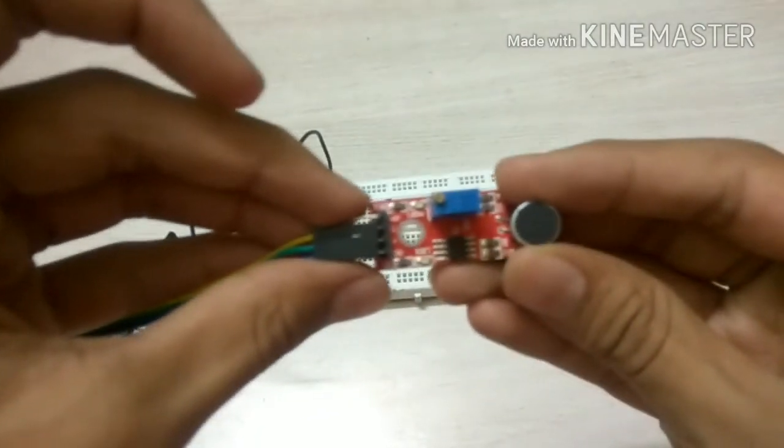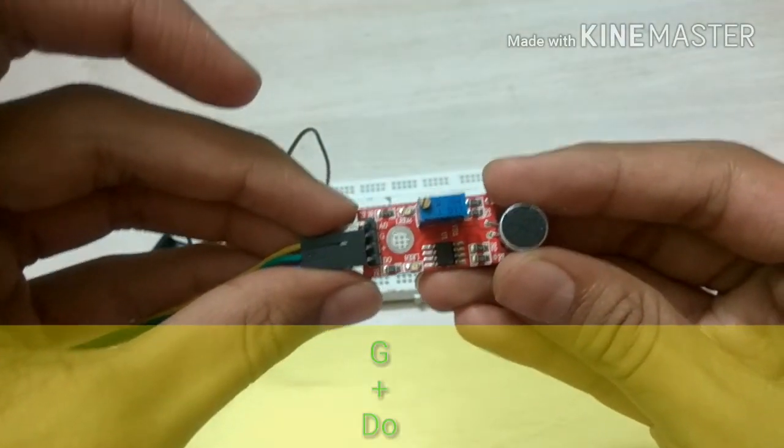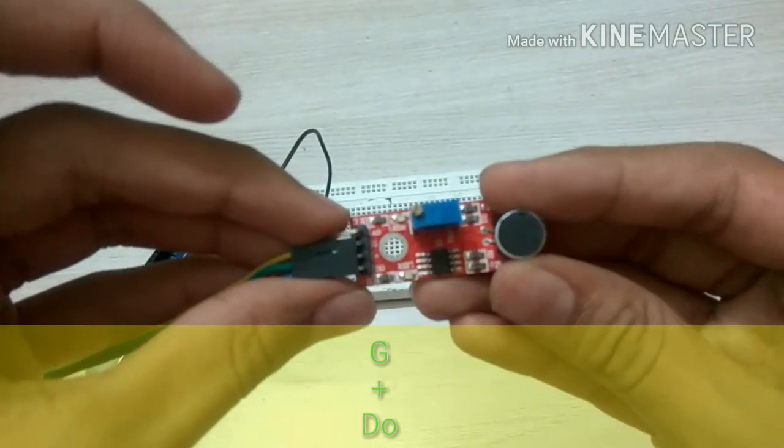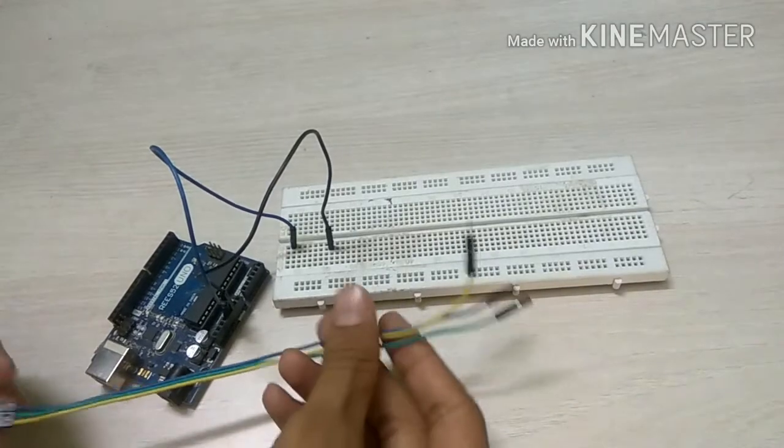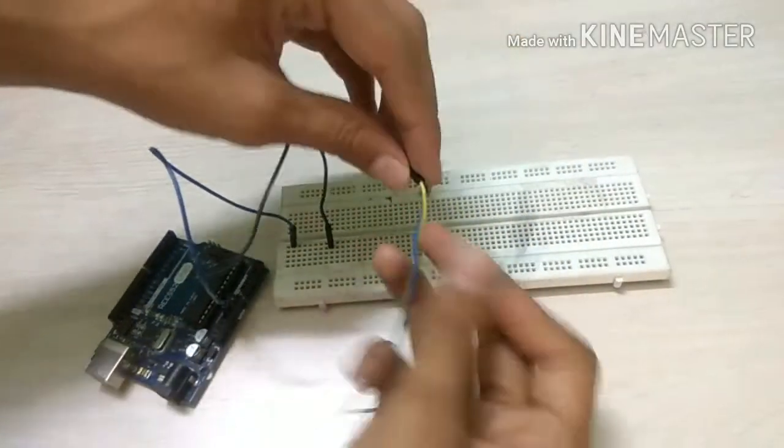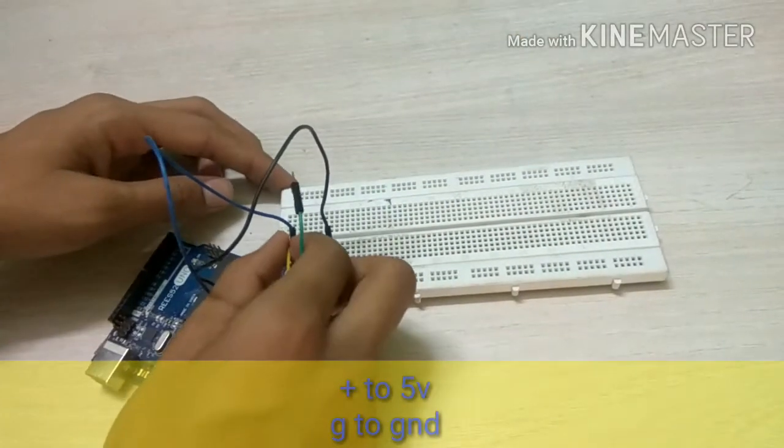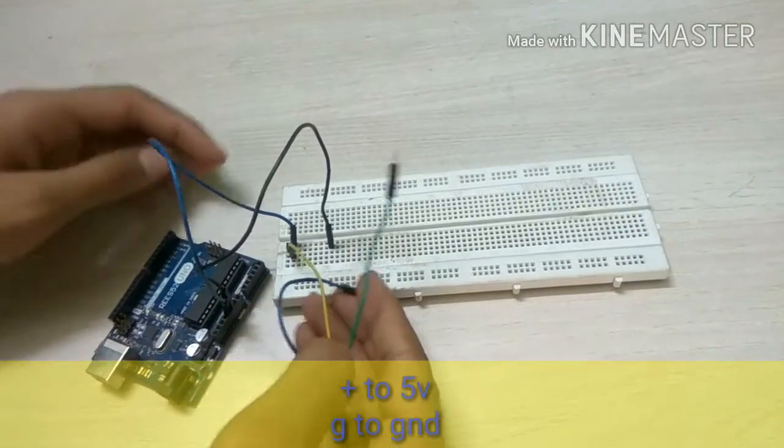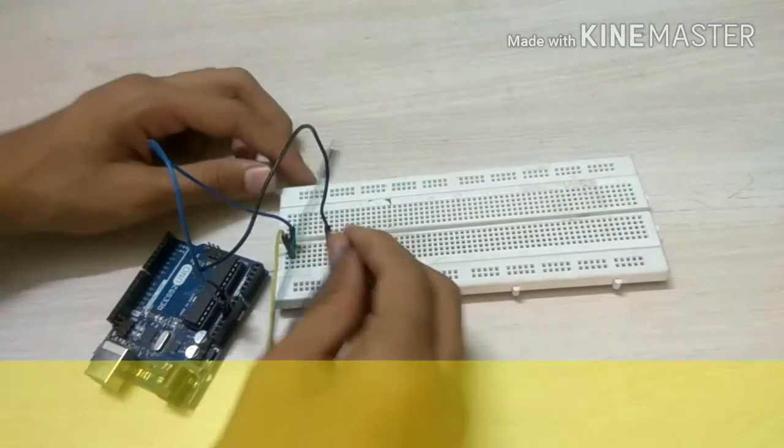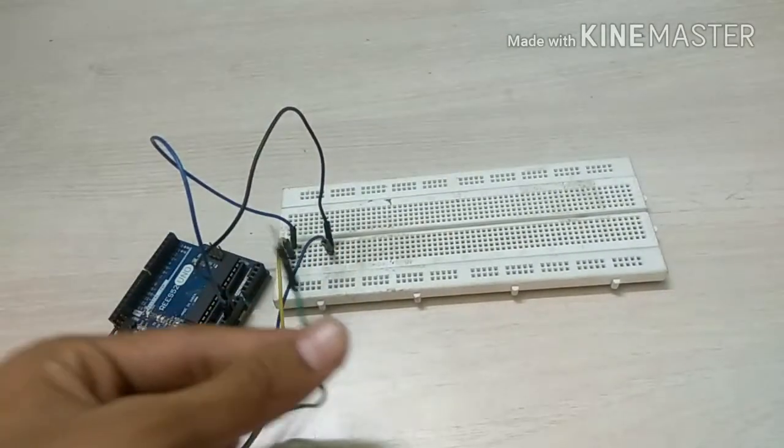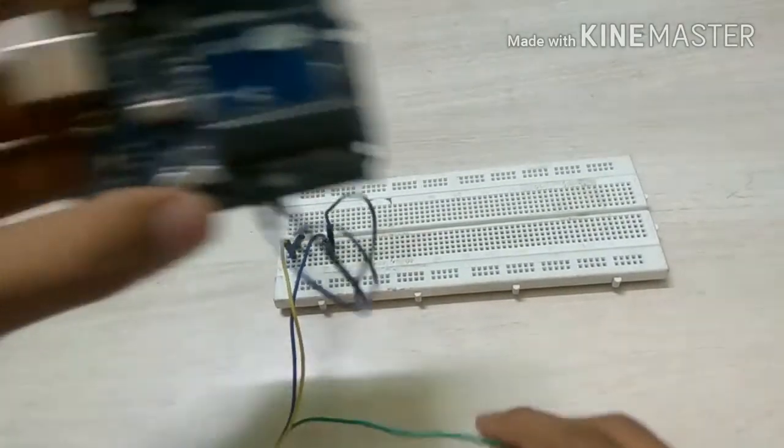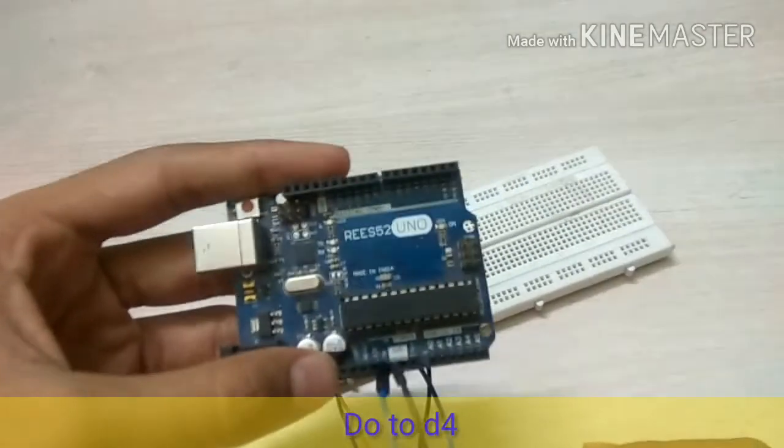We are using only the plus five volt, ground, and digital input of our sensor. So first of all, go ahead and connect the plus five volt and ground of our sensor to the plus five volt and ground of Arduino Uno. Now connect the digital input wire to the digital input pin 4 of our Arduino Uno.